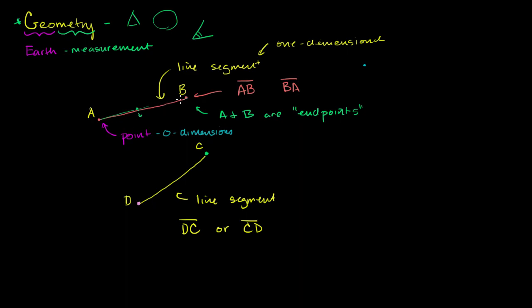Now, I just hinted that it can actually have a length. How do you refer to that? Well, you refer to that by not writing that line on it. So if I write AB with a line on top of it like that, that means I'm referring to the actual line segment. If I say that AB is equal to five units, it might be centimeters or meters or whatever, or just the abstract unit's five, that means that the distance between A and B is five. That the length of line segment AB is actually five.